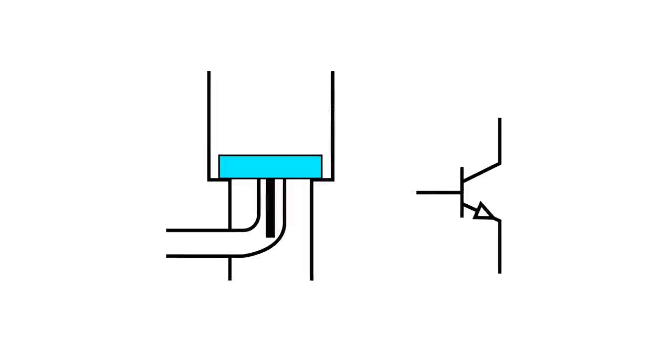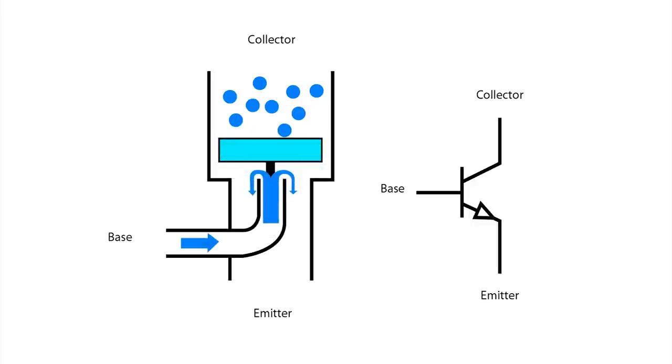But before we get into the details of how a current mirror source actually works, we need to know how a transistor works. As we've seen before with the famous water analogy, the bipolar junction transistor can be modeled with the following diagram. Imagine that the flow of water is the electrical current. As the water flows into the valve, it pushes up against the plug, allowing the larger flow of water to commence from the top. This effectively acts as an amplifier, since we are creating a large amount of current from a relatively small source.